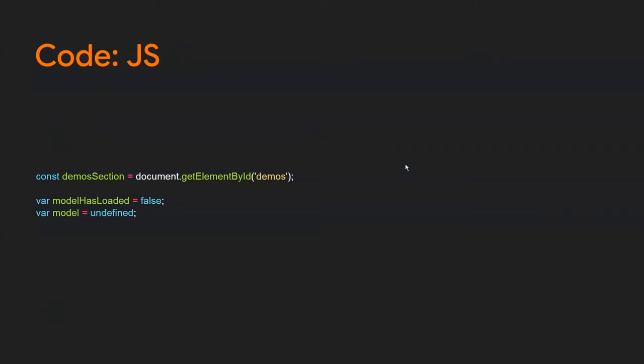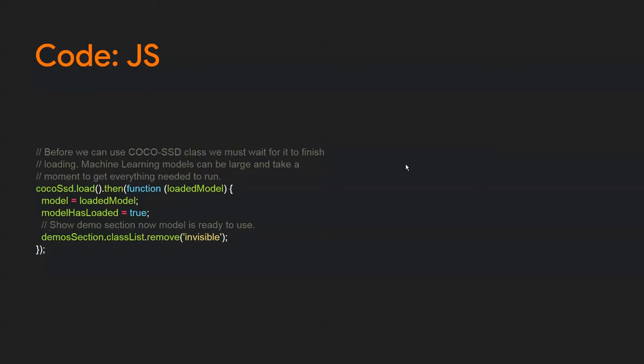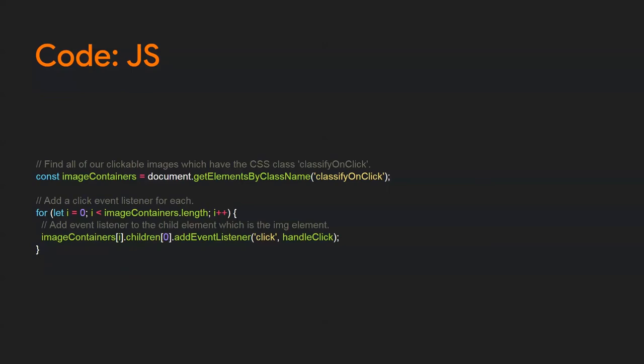In the JavaScript, first we define a constant for the demos section to get a reference to where our images live. We set a variable 'modelHasLoaded' to false and define a variable to store the model. To load the model, we call cocoSsd.load() — an async function — and use the then method to call back an anonymous function with the results, assigning the loaded model to our global variable and setting 'modelHasLoaded' to true. Finally, we remove the invisible class from our demo section to make it visible.